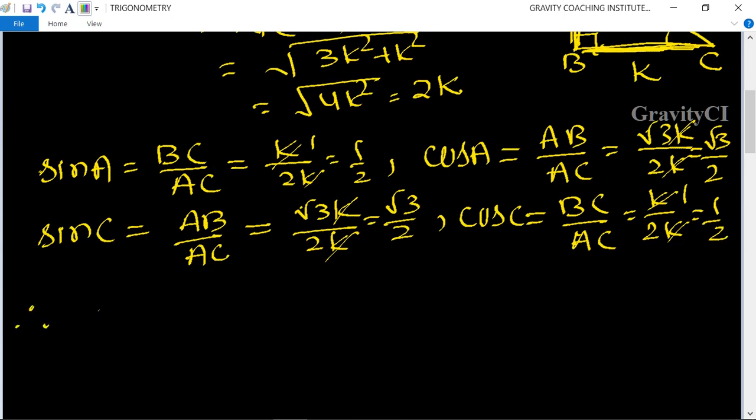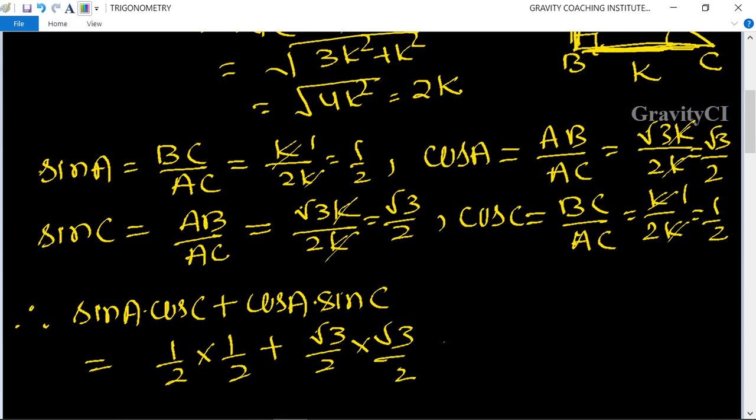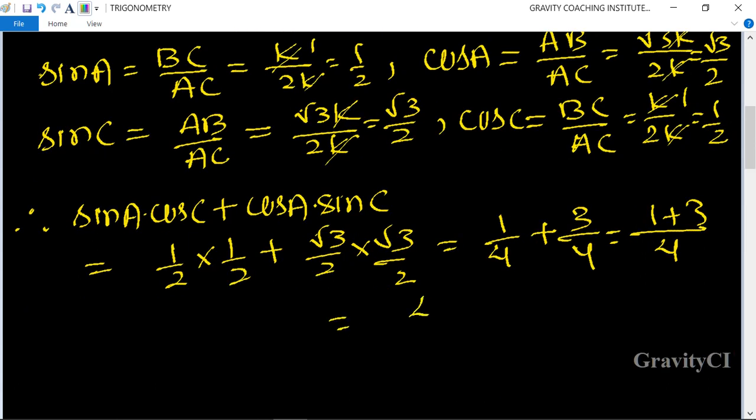Therefore, sin A into cos C plus cos A into sin C equals, sin A is 1 upon 2 and cos C is also 1 upon 2, plus cos A is root 3 upon 2 into sin C which is root 3 upon 2. This equals 1 upon 4 plus 3 upon 4. The LCM is 4, so 1 plus 3 equals 4 upon 4. 4 cancels with 4, so it equals 1, which is the required answer.